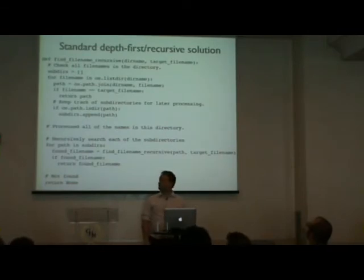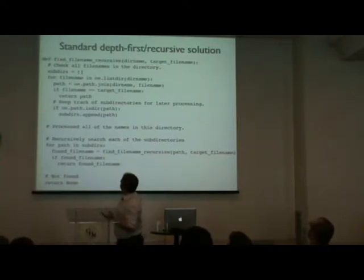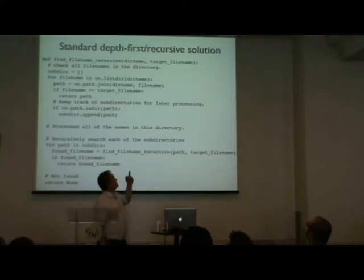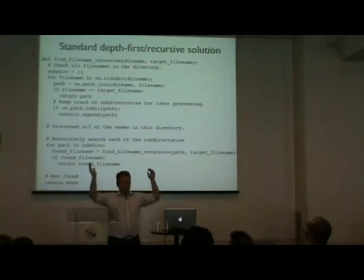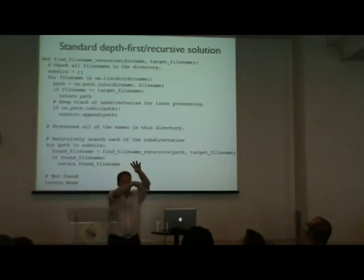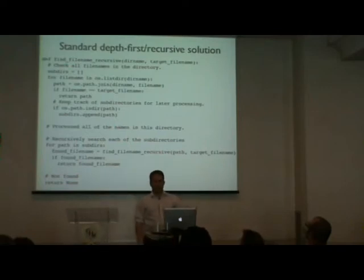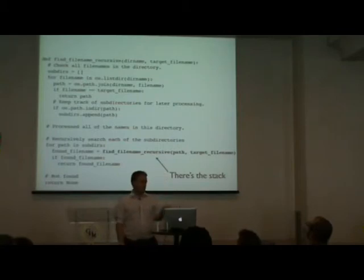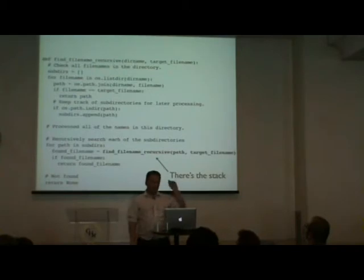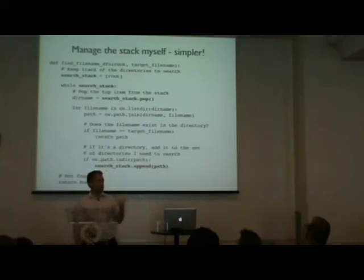Here's the standard recursive implementation: a function called 'find_recursive'. Start with a directory, look at every file in it. If one matches, you're done. If it doesn't match and it's a subdirectory, keep track of it to search later. Recurse into subdirectories. There is actually a stack here even though you don't see it — that stack is the Python call stack.